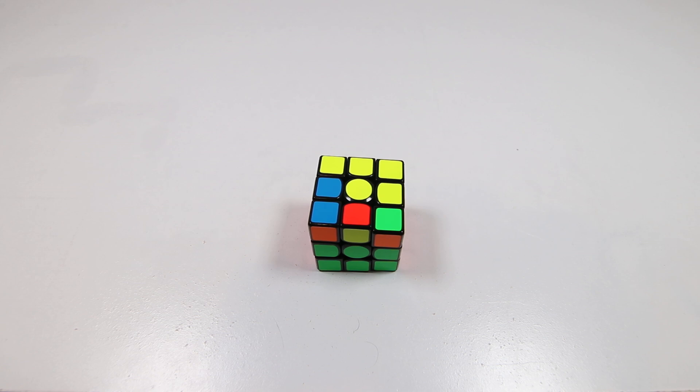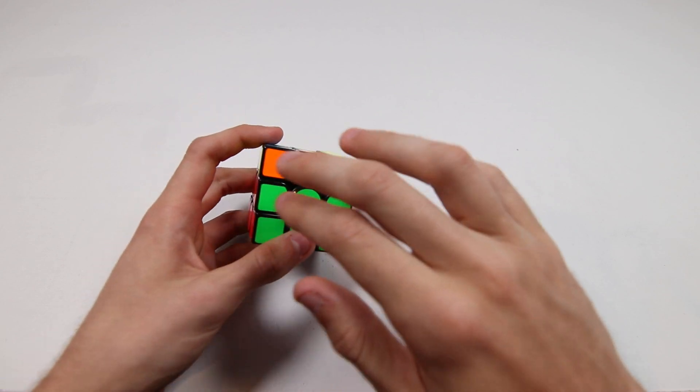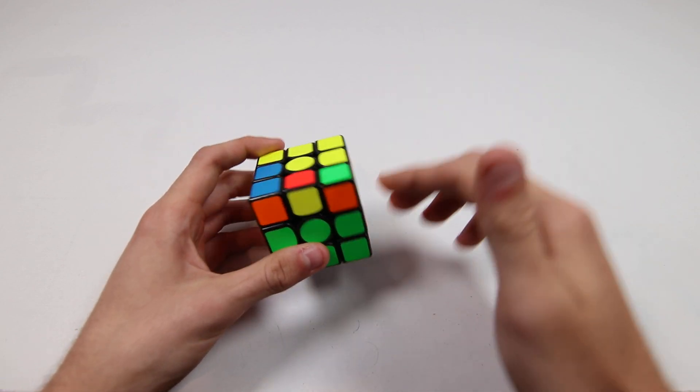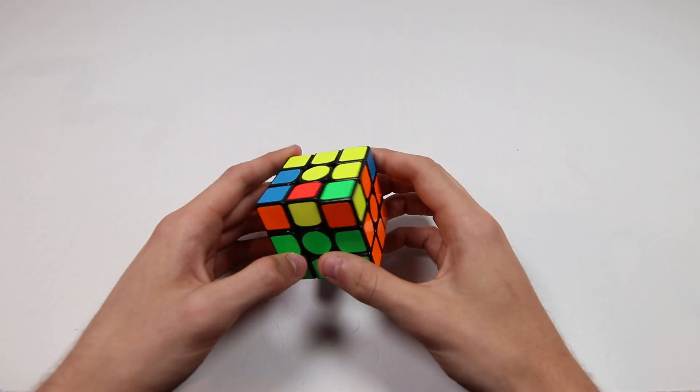Now in total there are 18 unique F2L cases where you get a five-mover like this, where you're going from either the front left to back right, or you're going from front right to back left. The way you figure out these cases is you basically just set up a free pair.